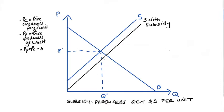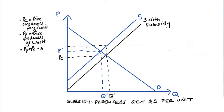As a result of the subsidy our supply curve has shifted down. The new equilibrium point isolates the new amount traded — we'll call that q' — and also the price that consumers pay per unit, which we've called pc. We can find the price that producers get per unit: the vertical distance between the old supply curve and the new supply curve is exactly s, so going up from pc to the old supply curve gives us pp, which equals pc plus s.